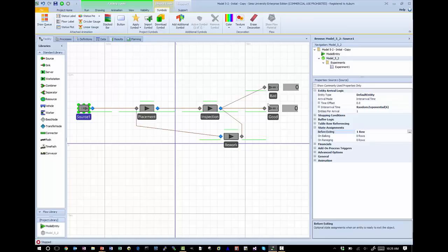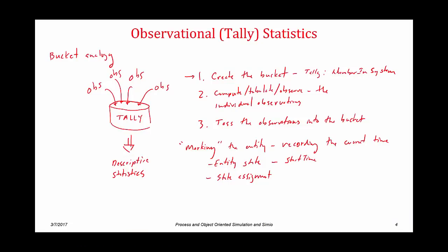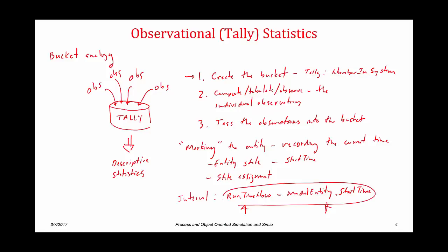Now on the back side, when an entity leaves, we need to record the interval. The interval we want to record is run dot time now — current simulated time — minus model entity dot start time. This start time is the value of the simulated time when the entity arrives; this is the time when the entity leaves. So that interval — run dot time now minus model entity dot start time — is in fact the observation of the time-in-system, corresponding exactly to our observations when we make this recording when the entity is leaving the system.